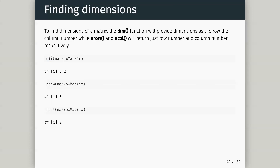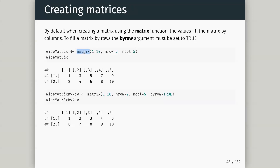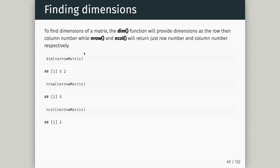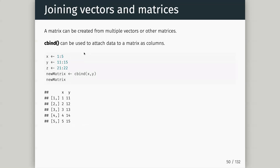A matrix can be created with the matrix function, but a lot of the time you'll get your matrix from reading in a file. You may want to join two matrices together — cbind and rbind are a family of functions which allow us to join by column or by row. cbind allows us to attach data as columns. Here I create a vector one to five and one which is 11 to 15 — same length — and cbind x and y to get a matrix.